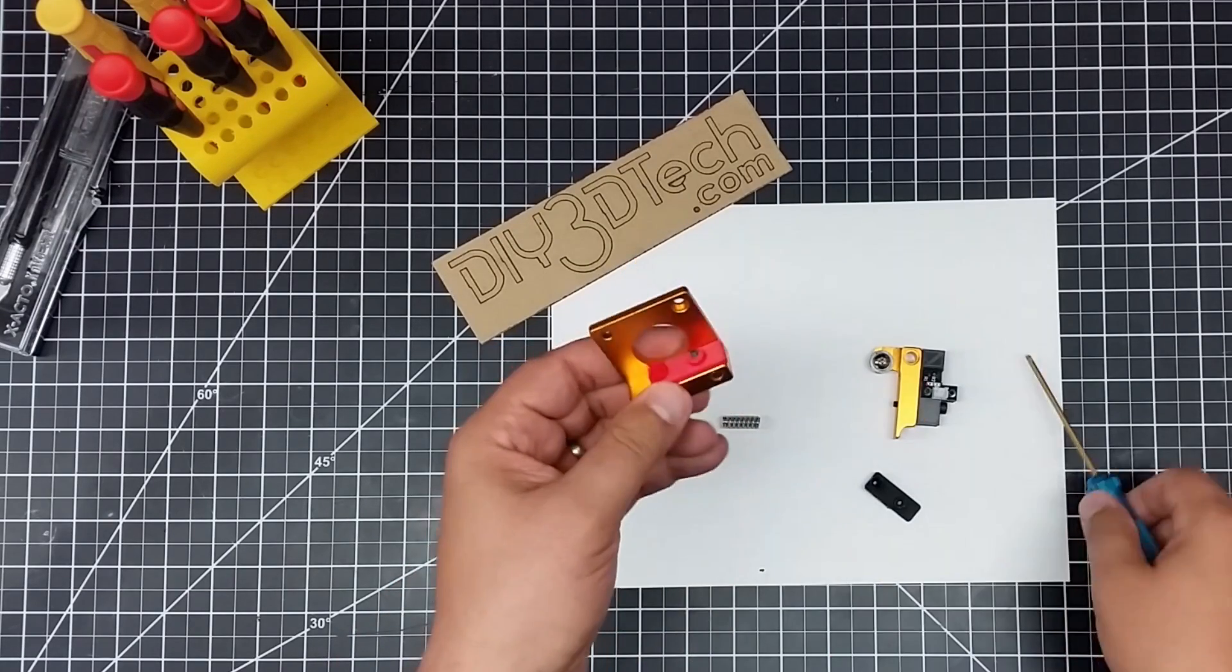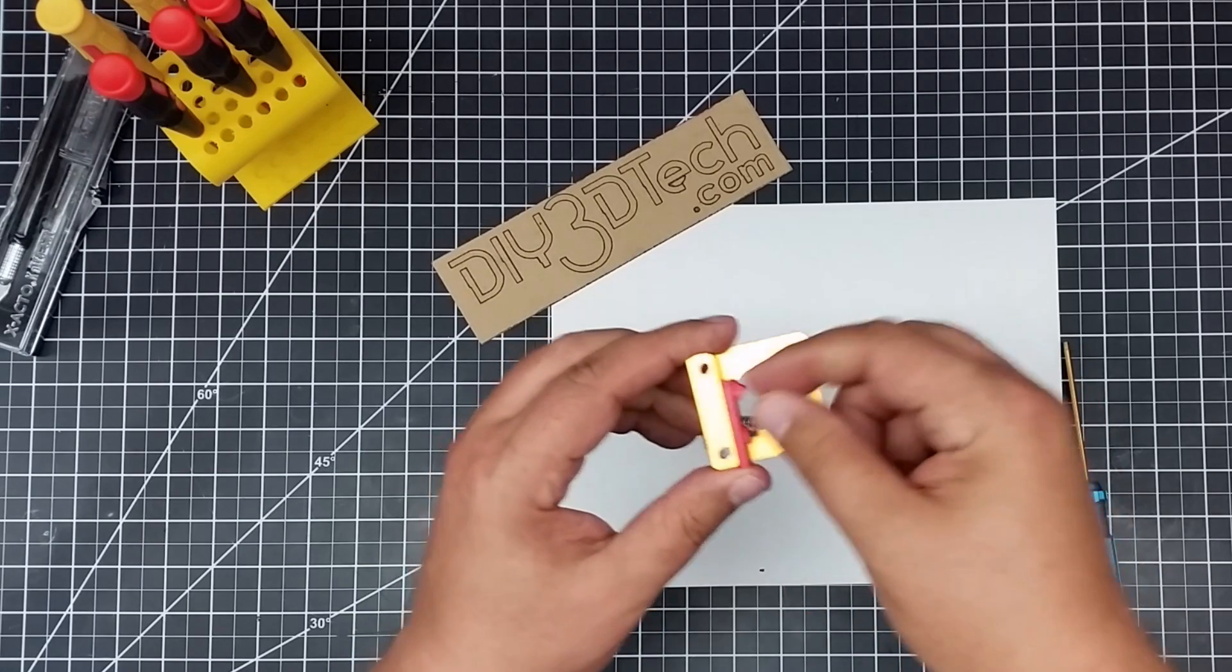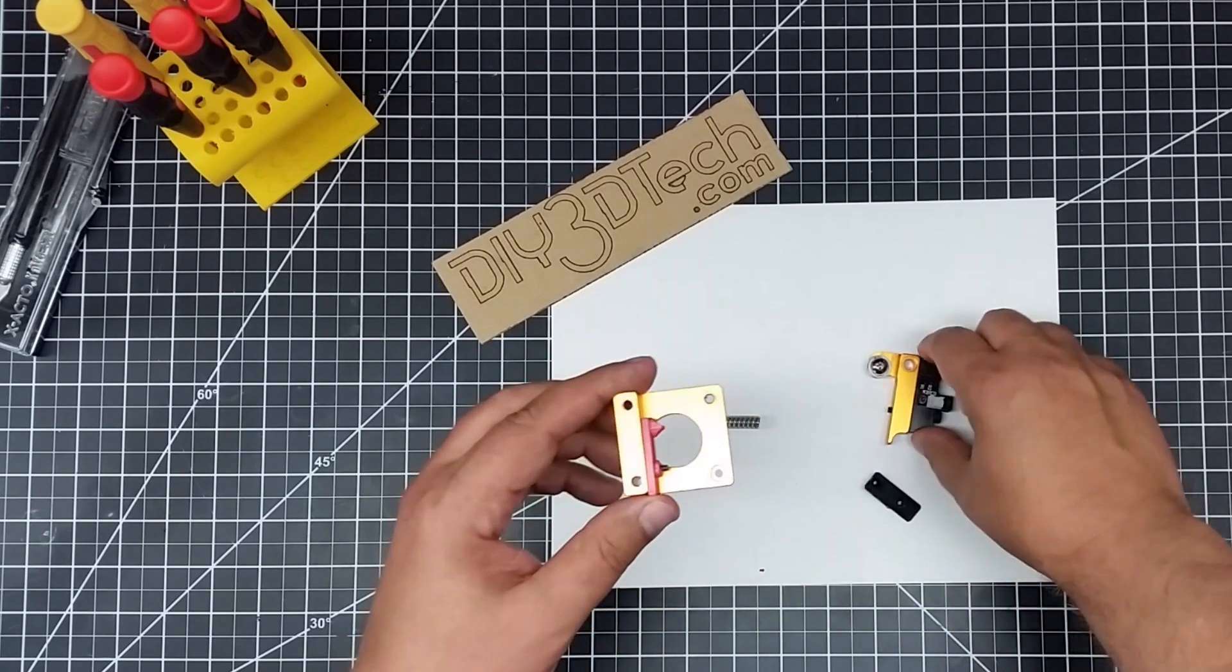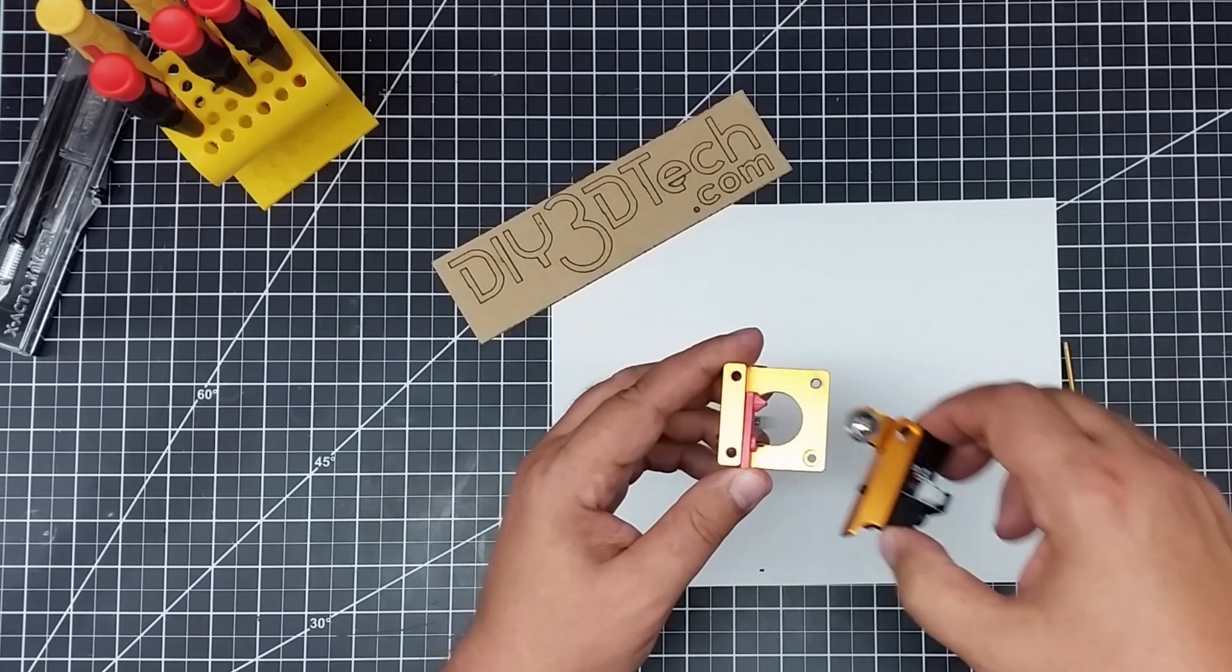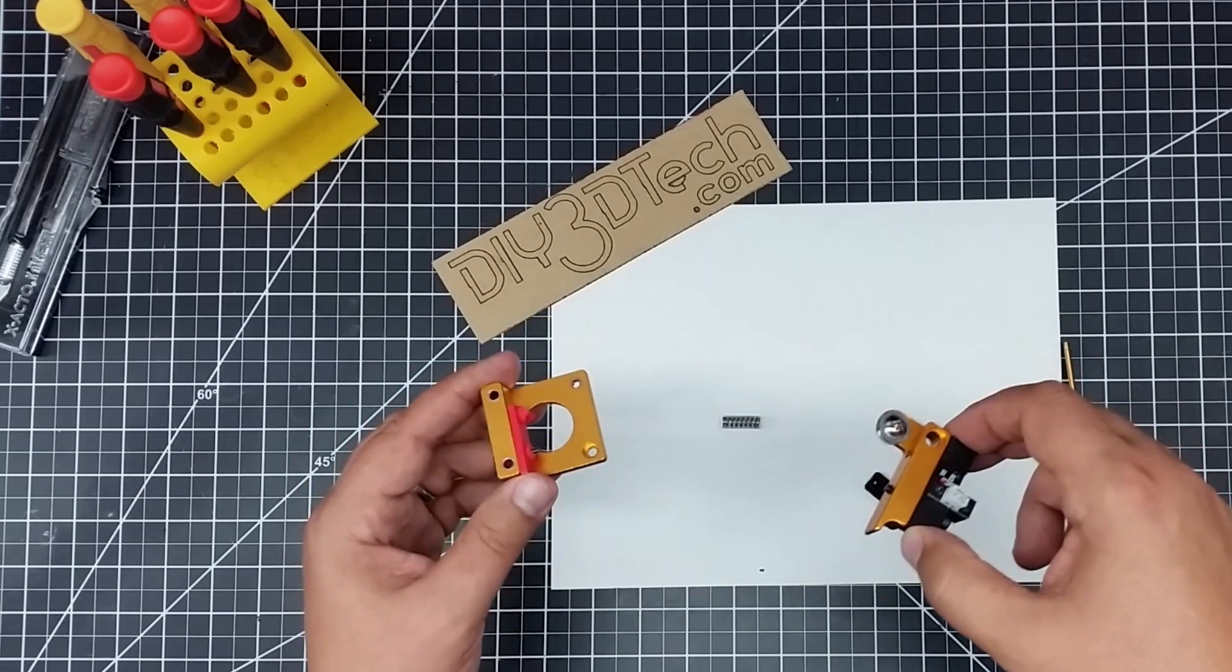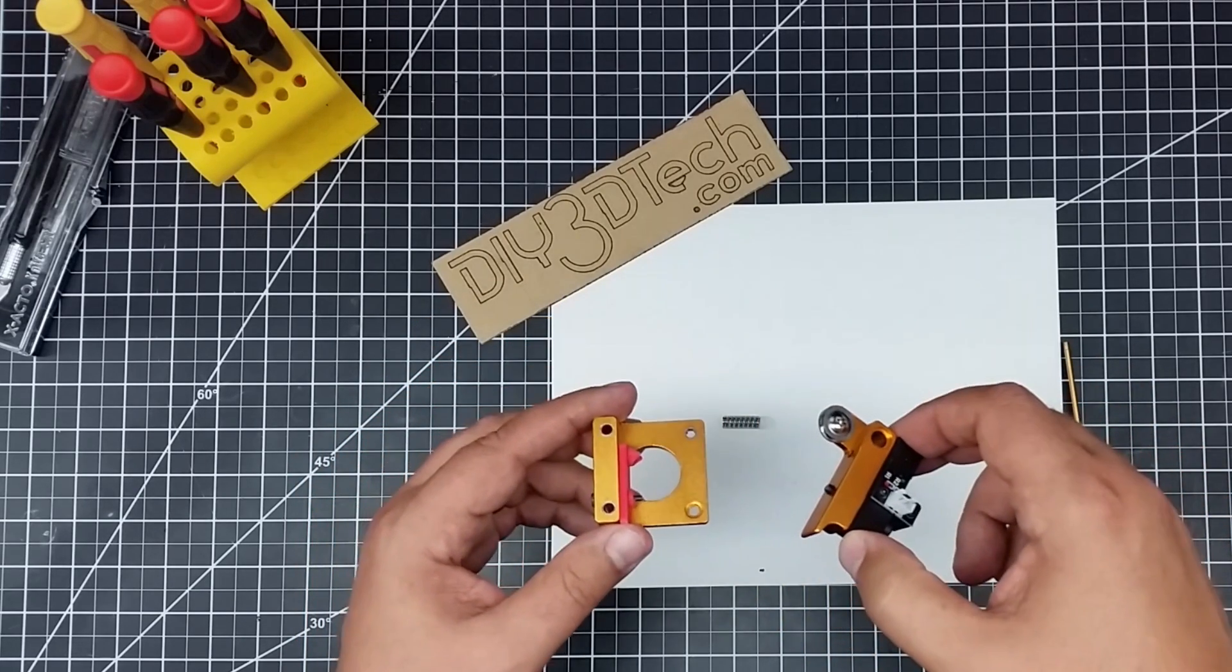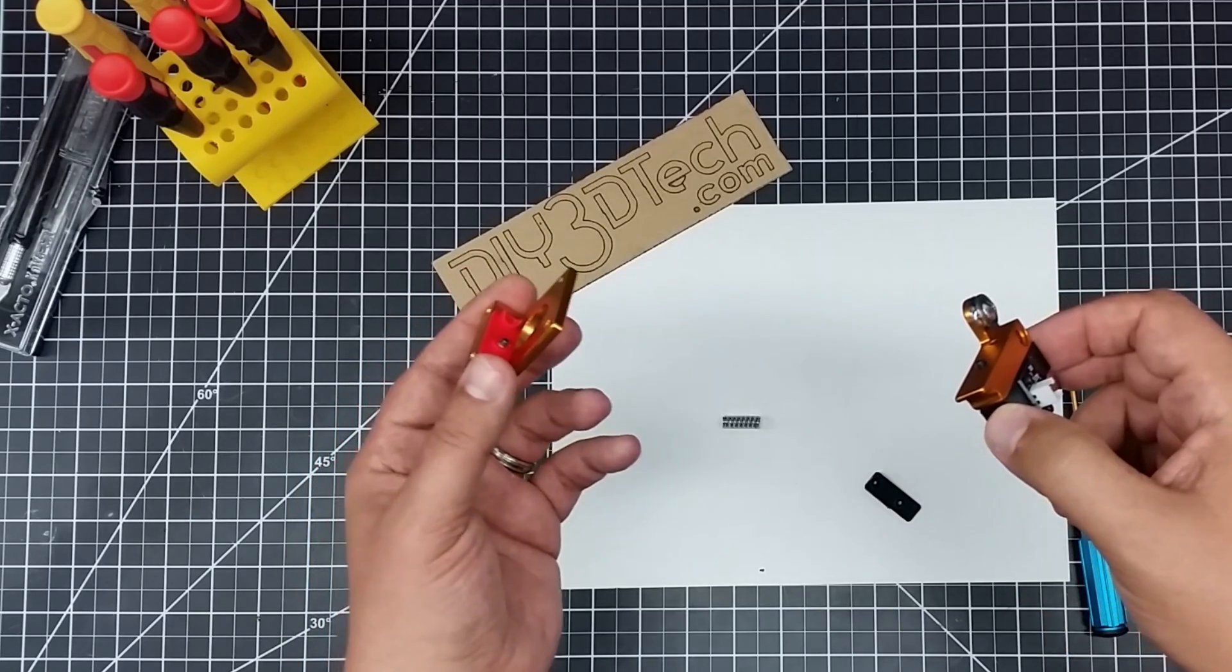So there we go. Now what will happen is this will go back on the machine. And again, this pinch wheel, as you can see here, is going to pinch this against the extruder cog gear. So let's go ahead and put this back on the AlphaWise and see how it works.